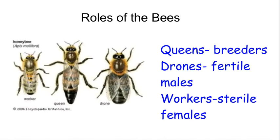Let's talk about what the different bees are. There are only three types of bees. You've got your queen, who is normally much larger than the other bees and is the only fertile female, so she's the key breeder. Then you've got all the drones — they're pretty big too. They're the males and they're also fertile, so they're going to breed with the queen.